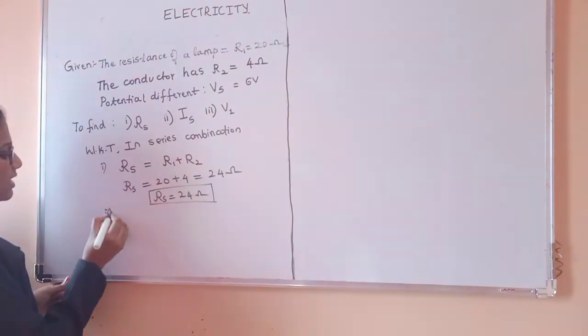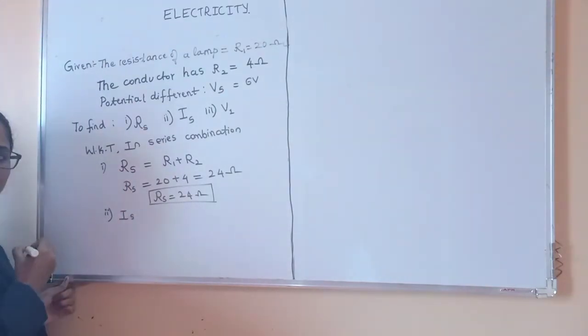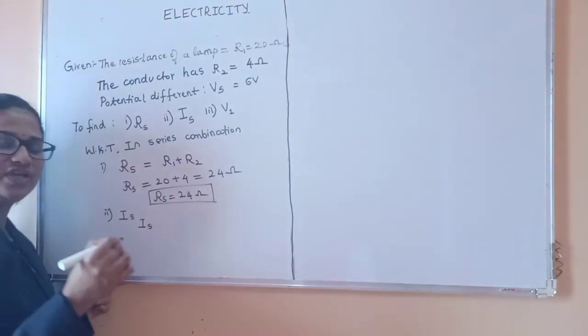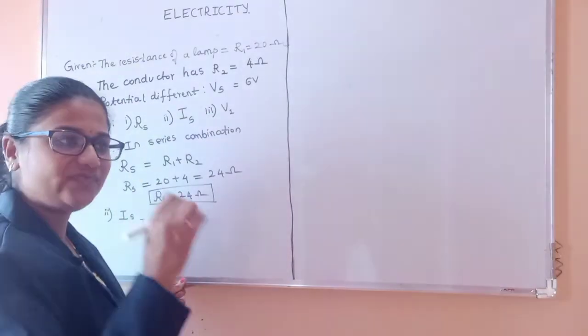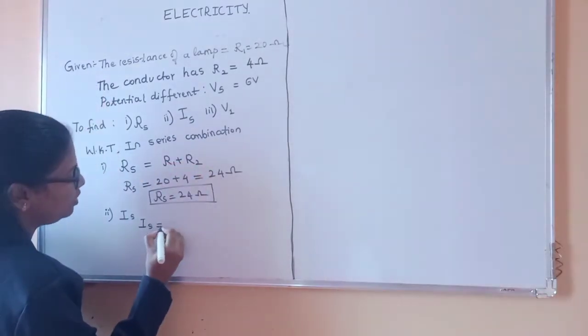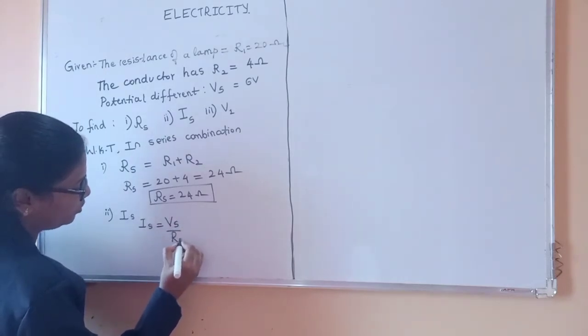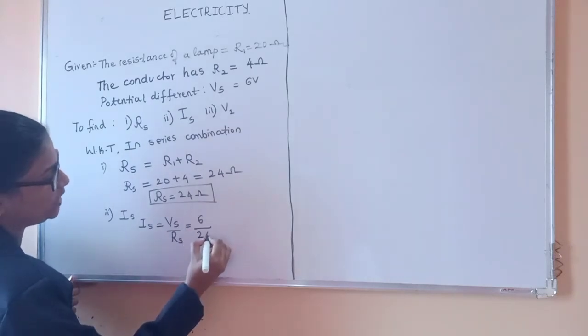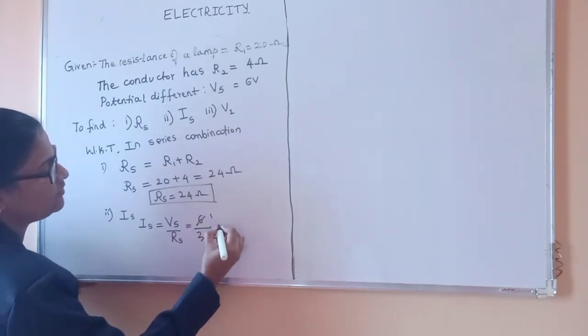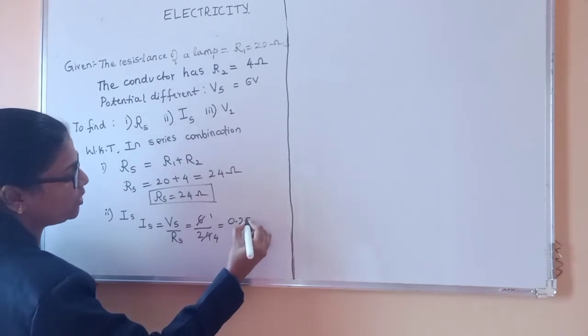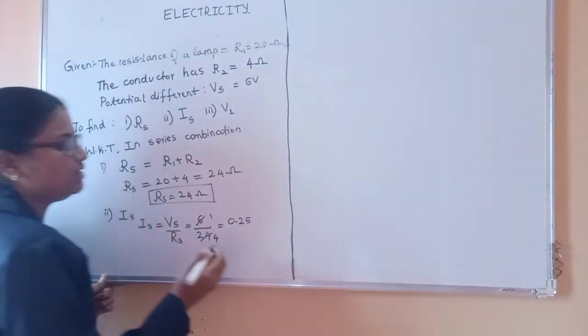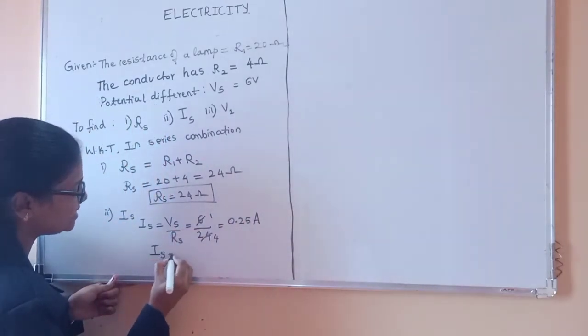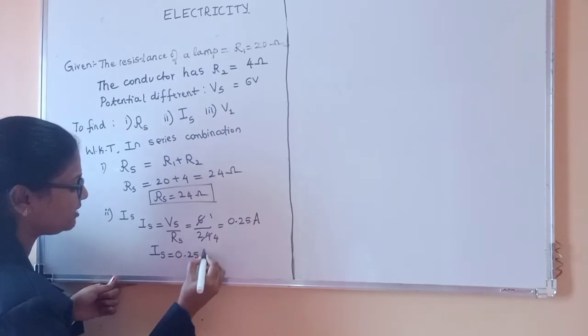Next they asked current, that is current in series Is. So we know that V equals I into R, so we can write it as I equals Vs by Rs. What is Vs here? We have 6. What is Rs? We got 24. 6 divided by 24, when we simplify further we will get it as 0.25. As it is current, the SI unit is ampere. So Is, that is current in series, we got it as 0.25 ampere.